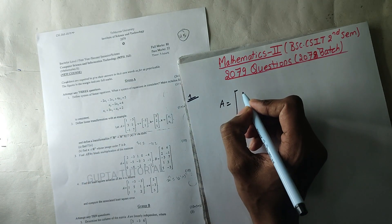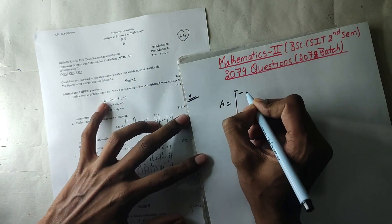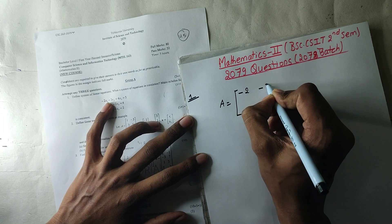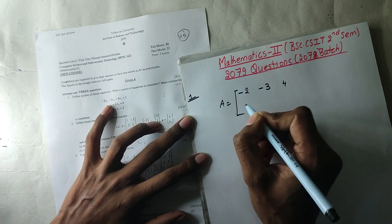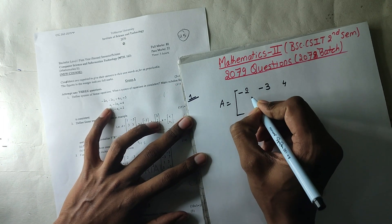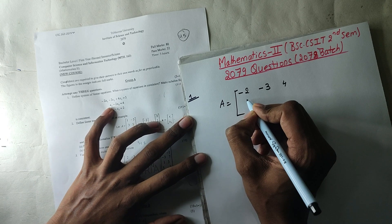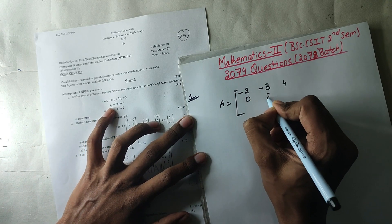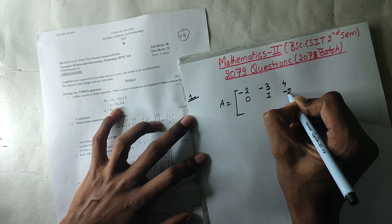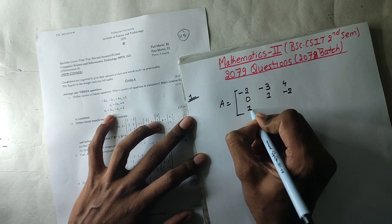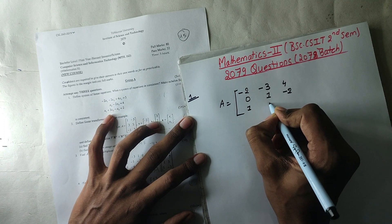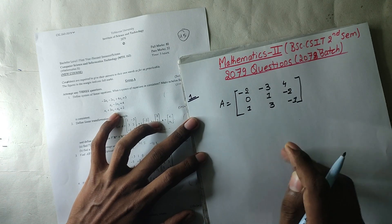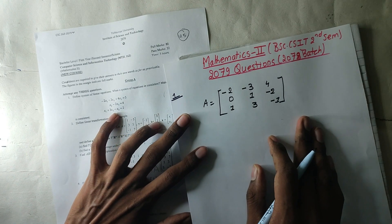This is the coefficient of x1 minus 2, x2 minus 3, this is 4. This is x1 is 6, this is 0, x2 is 1, x3 is minus 2, this is 1, this is 3, this is minus 1. This is a coefficient.